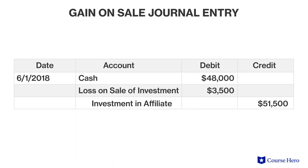Suppose that Ace Company sells its investment for $48,000 on June 1, 2018. The first step is to record the receipt of cash and then remove the investment in the affiliate account at whatever balance it currently stands. If the entries result in a debit shortage, that debit represents the loss on the sale of the investment. If the entries result in a credit shortage, that credit represents the gain on the sale of the investment.